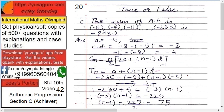And what is given? 3. So this is true. Next, the sum of the AP is minus 5.